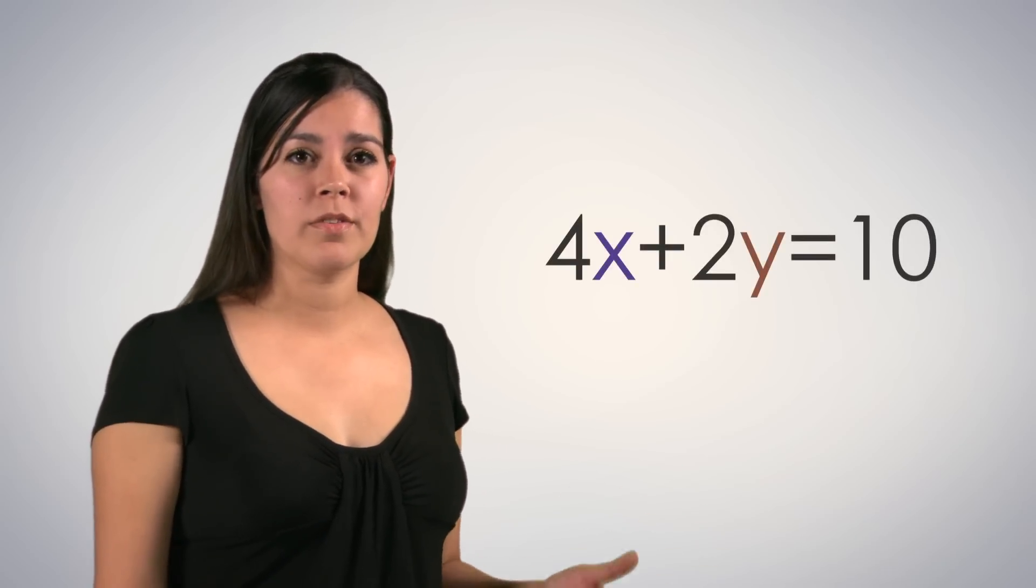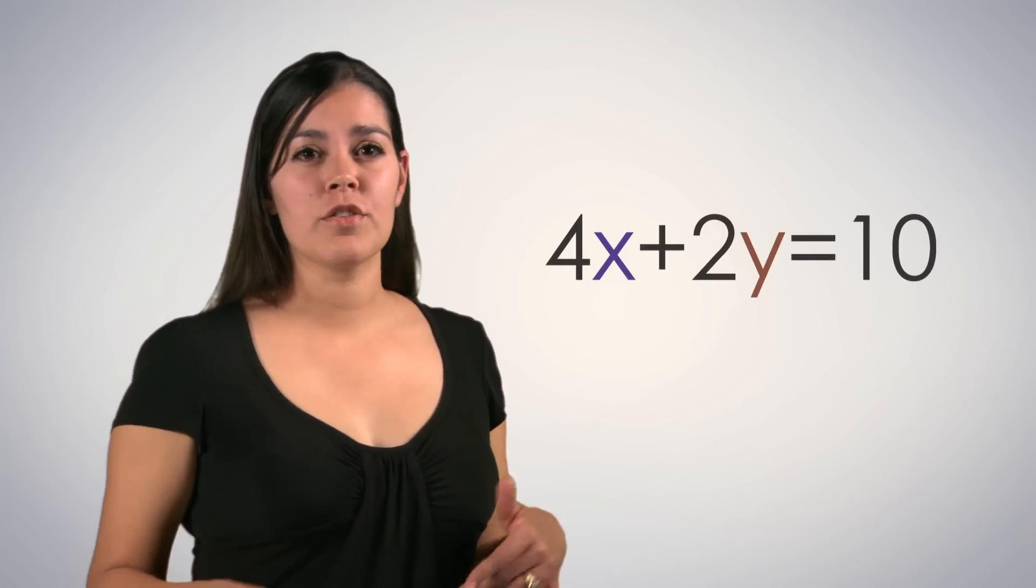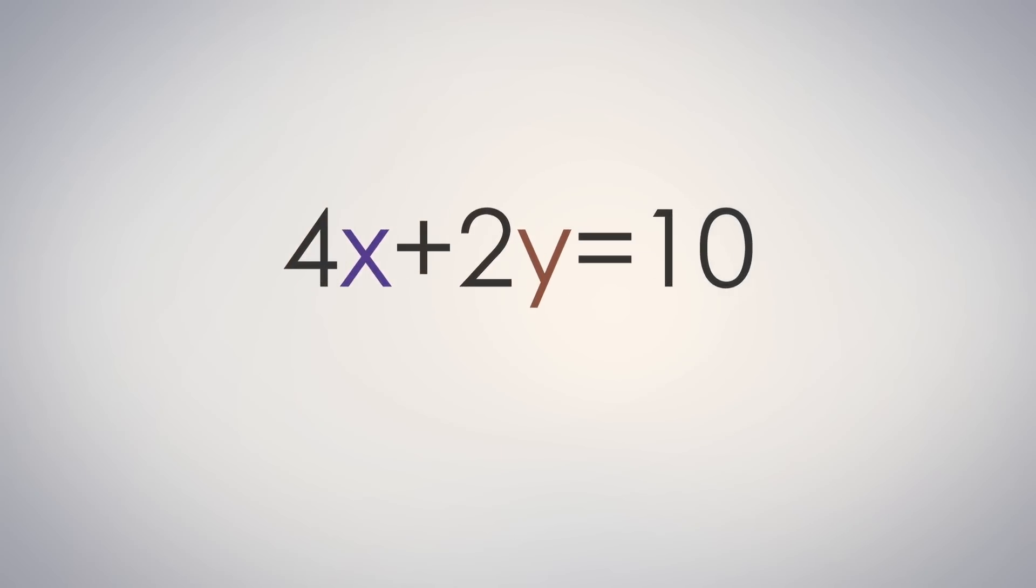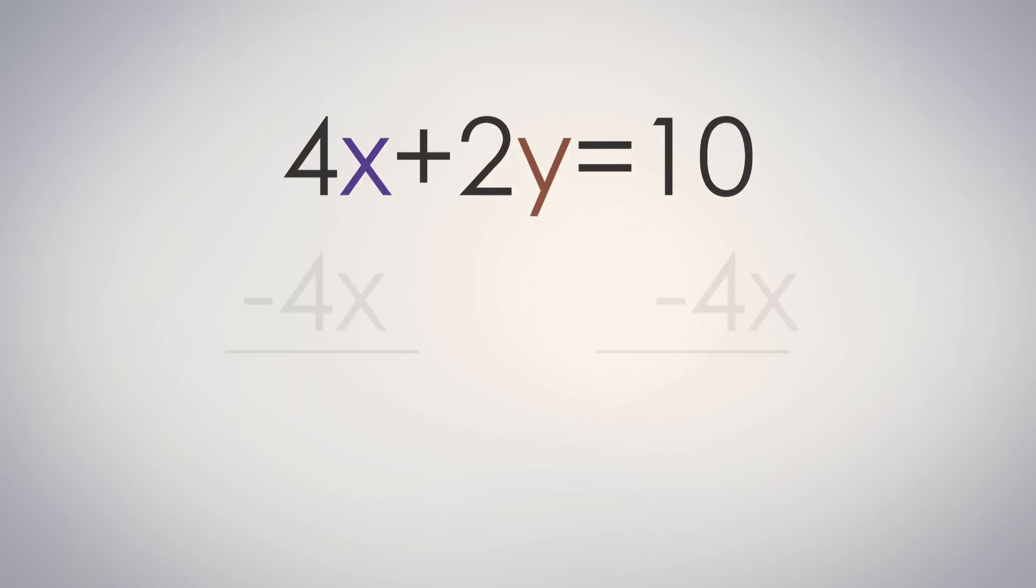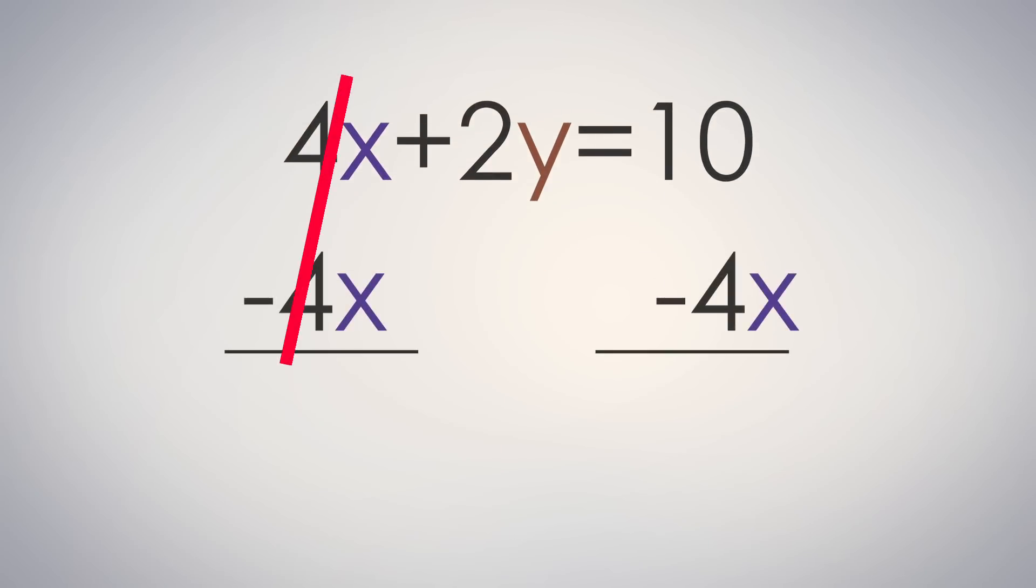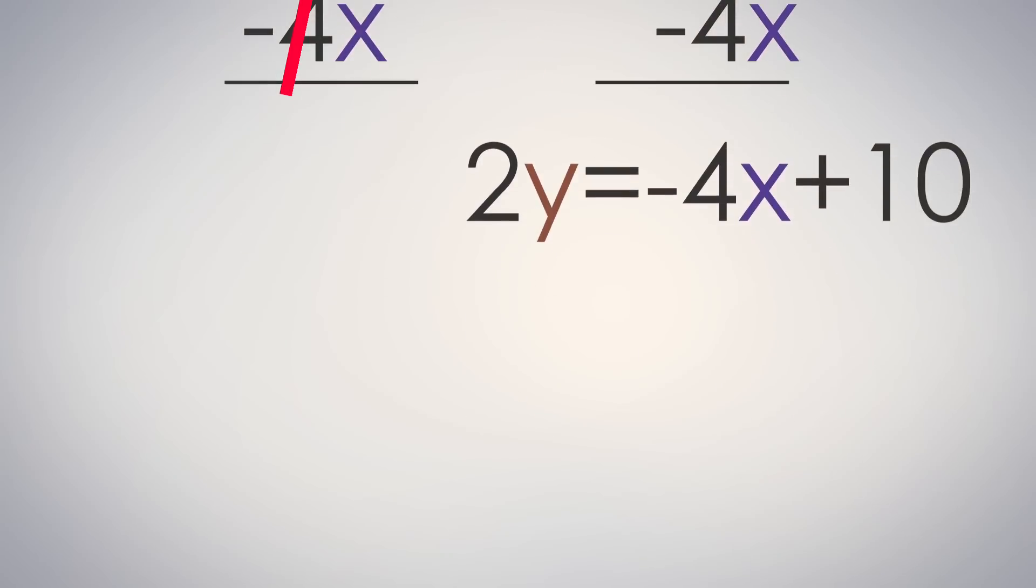Let's do another one. How about 4x plus 2y equals 10? To get this into the slope-intercept form, we need to get y by itself. So let's subtract 4x from both sides. That gives us 2y equals negative 4x plus 10. We're getting there, but we still need to get y by itself. So let's divide everything by 2. And voila!